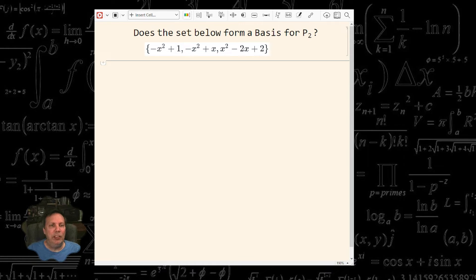So I have three vectors here. Now what I do know is automatically that the dimension of P2, we already know is three. And when I look at the set, I have three elements. So at least I know I have the right number of elements. Now I just need to show if they produce a linearly independent set.